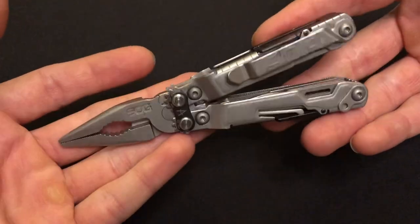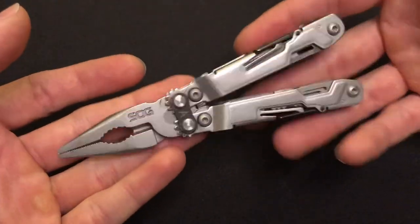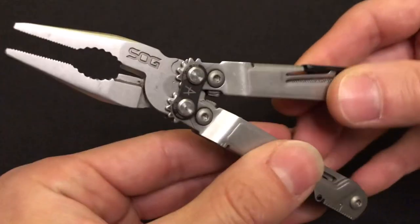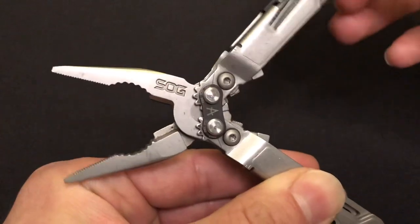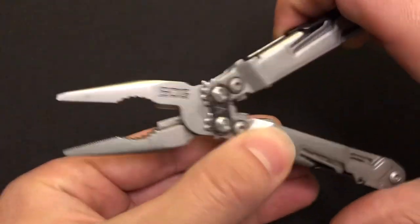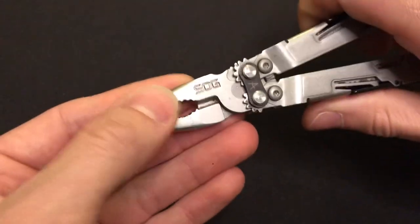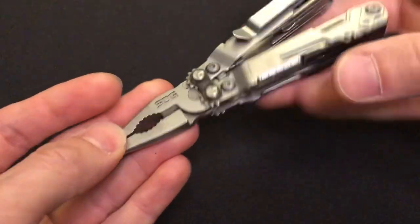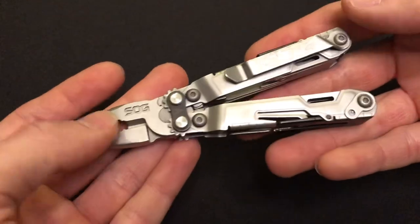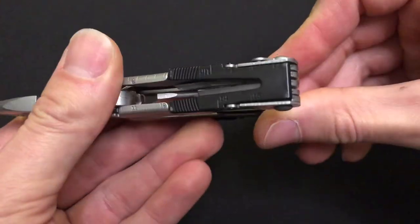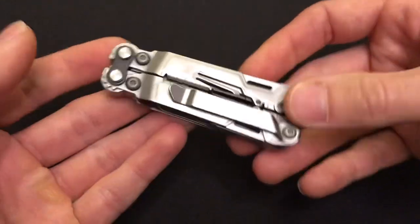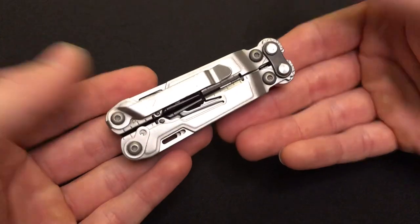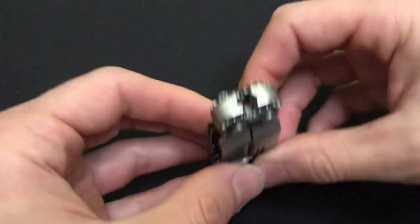This is their smallest pliers-based multi-tool, I believe. It does have the proprietary geared mechanism for double leverage at the cutting jaws here and the gripping jaws up here on the plier head. It is a very handy little tool, and it does come with a pocket clip standard, which I'm a big fan of. I don't really like sheaths. So let's get straight into it here.